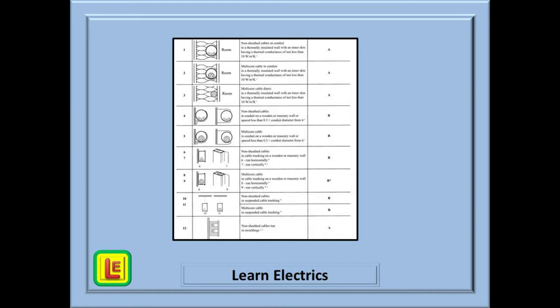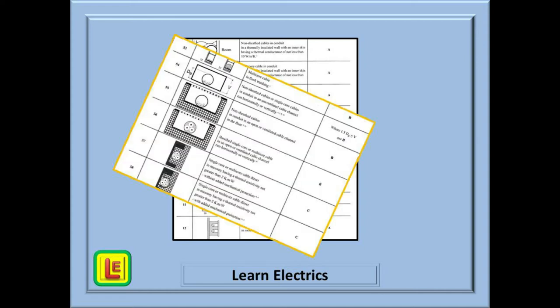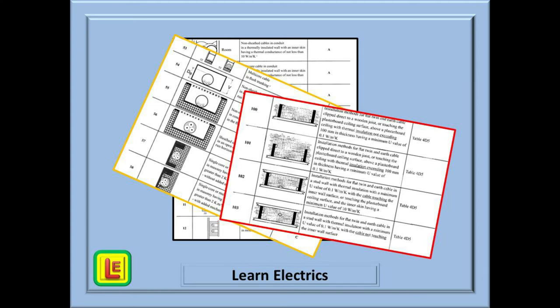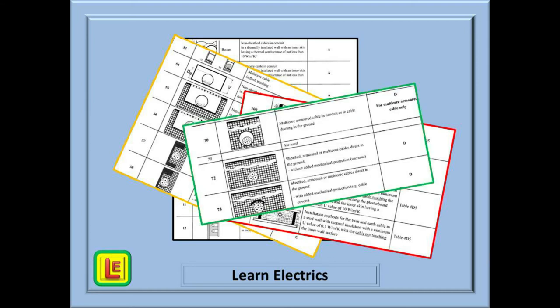If we look at Table 4A2 on pages 386 onwards, we see lots of different reference methods. It is very important that you use the correct reference method when selecting cable sizes, and that you record the correct reference method letter or number on the test certificates. It is part of your job to get it right. At first, the sheer number of reference methods can be intimidating, but we are about to show you a method of looking at them that breaks them down into a very logical and easily memorized system. This is the method that we have taught at Learn Electrics for many years, and we have always found that everyone quickly warms to this method and more easily remembers the correct categories.